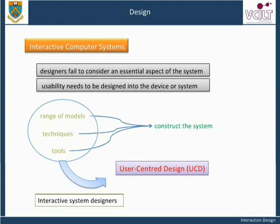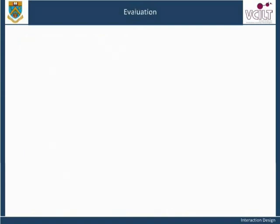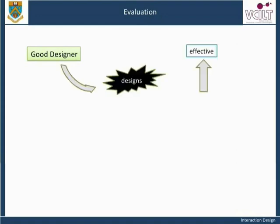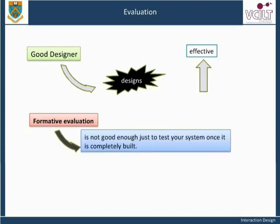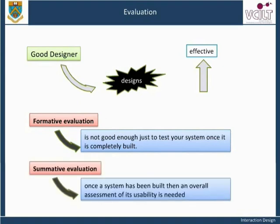Interactive system designers must understand their users. A good designer will not simply trust that their skill and experience will always produce highly effective designs. Evaluation is about testing to see if the interactive system has good usability and usefulness. There are two types: formative evaluation, which is carried out all the way through the design and development cycle to guide the design; and summative evaluation, which is an overall assessment of usability once a system is built, to validate design aspects and test user acceptance.